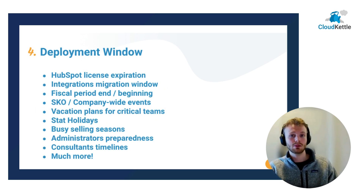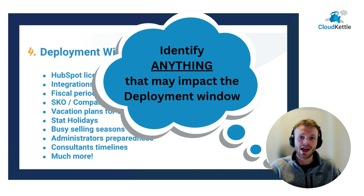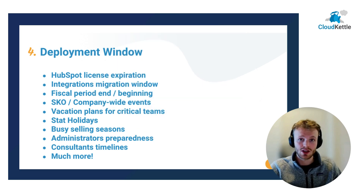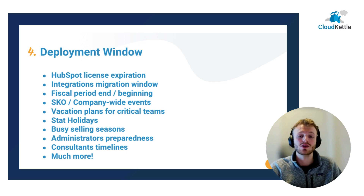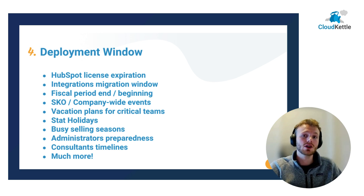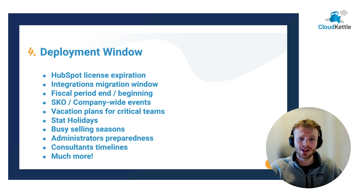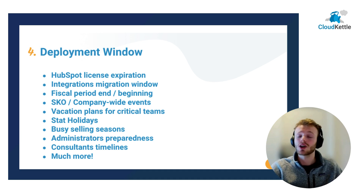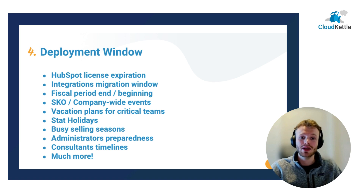The last priority — the most important and expensive one — is identifying absolutely anything that can affect your deployment window. This is the big one that's going to cost you a lot of money if you get it wrong, because if you have to pay for duplicate environments, duplicate licenses, duplicate integrations, and access users, it's going to take chunks out of your budget. Understand when your HubSpot license is expiring, when your integration licenses are expiring, and when integration partners will allow you to move to a new environment. When's the beginning and end of your fiscal period? Do you have an SKO or company-wide event? Do you have vacation plans for critical team members? Are there statutory holidays or busy selling seasons to account for? Are your HubSpot administrators ready to become Salesforce administrators? Are third-party consultants able to work on timelines that match your expectations? Ask these questions internally and early on, and forecast as accurately as possible when you want to flip HubSpot off and turn Salesforce on.